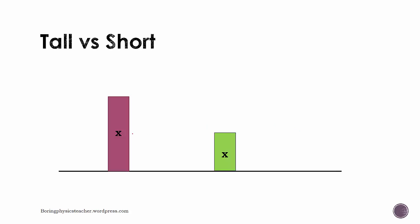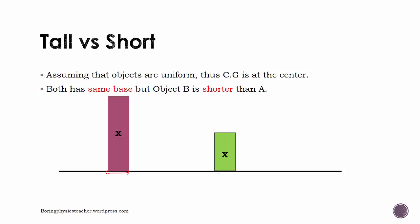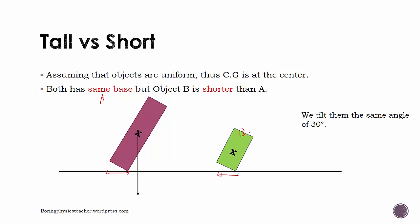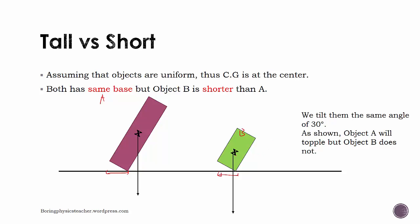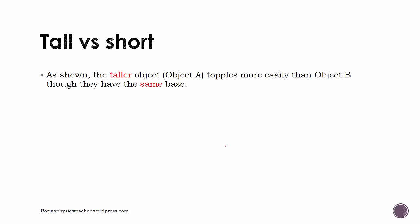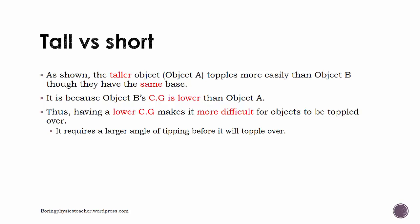Intuitively, taller objects are easier to topple than shorter ones. Comparing two objects with the same base but different heights — object A being taller and object B shorter — when tilted at the same angle, object A topples but object B does not. This is because object B has a lower center of gravity. Having a lower center of gravity makes it more difficult for objects to be toppled, so stability can be increased by lowering the center of gravity.